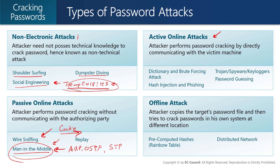Active online attacks use a piece of software that does automated login attempts. Within the Metasploit framework, auxiliary modules allow you to authenticate to a Telnet, SSH, or RDP server, so you can do automated login attacks. There's also utilities like Hydra that can be used for online attacks. You point to an IP address of a remote server, specify the protocol — HTTP, Telnet, FTP — and then use a word list, trying every single word in the username and password list to try to break in.